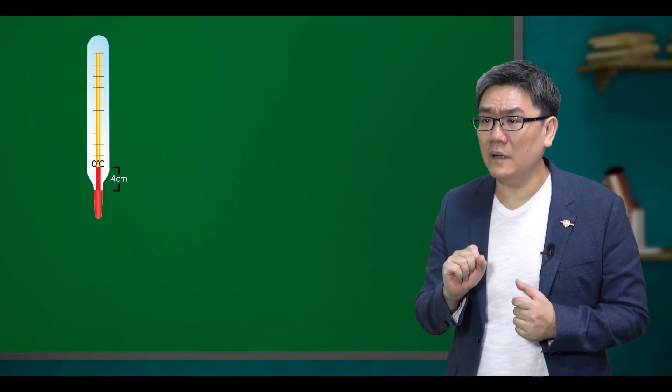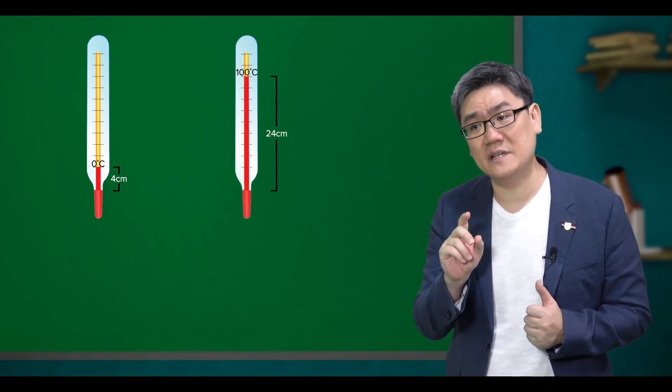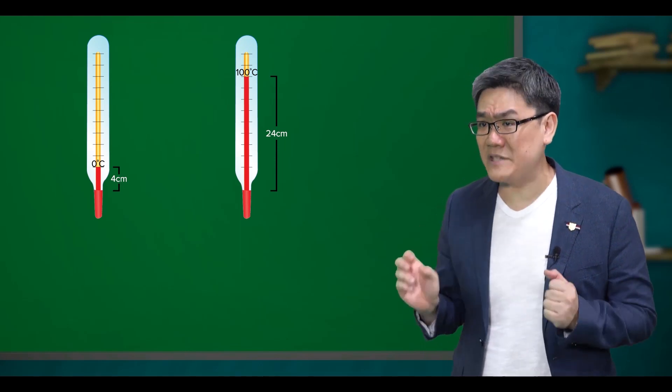Correct. Let's say the 0 degree mark is 4 centimeters above the bulb, while the 100 degree mark is 24 centimeters above the bulb. As a result...